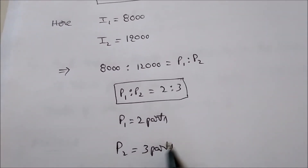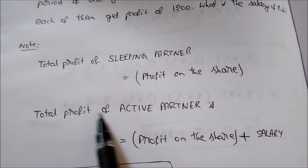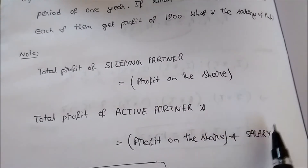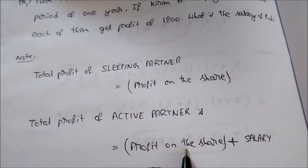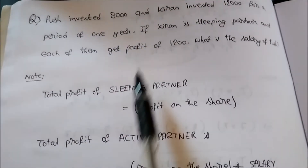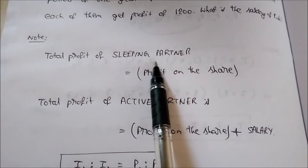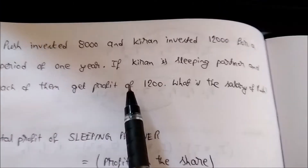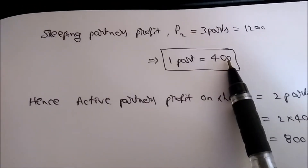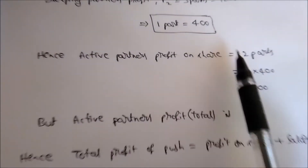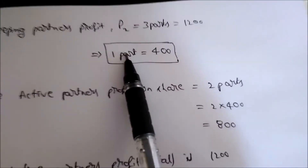The profit of the first person is two parts and the profit of the second person is three parts. As explained, the total profit of the active partner is profit on share plus salary. First, consider the total profit of the sleeping partner, Kiran — his profit is three parts, and its value is 1,200. So one part equals 400. The active partner's profit on share is two parts, which equals 2 × 400 = 800.